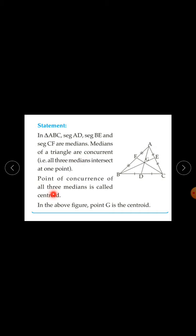The point of concurrence of all three medians is called the centroid. In the above figure, point G is the centroid, where AD, BE, and CF are medians that all intersect at one point. So G is the centroid of triangle ABC.